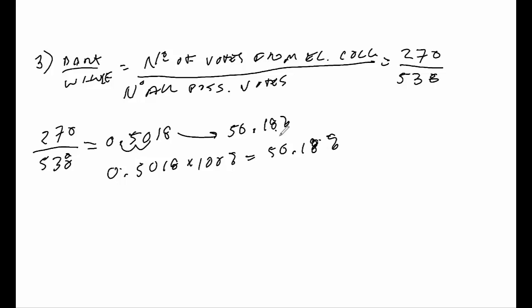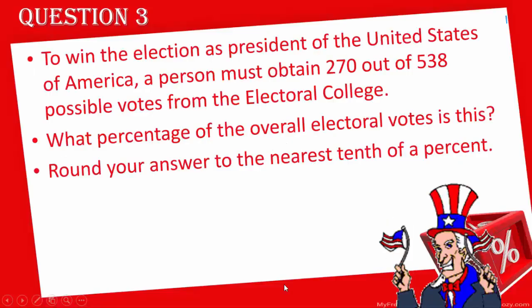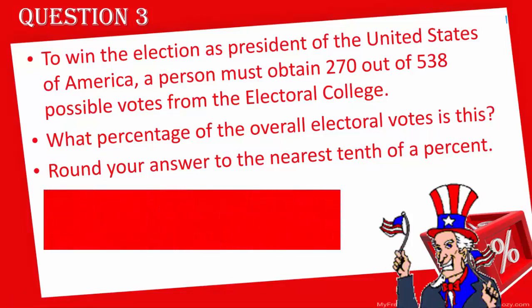The question also asks us to round to the nearest tenth. Here's the tenths place and here's the hundredths place — there's an eight in the hundredths place. According to rounding rules, if the digit next to the tenths place is five or over, the tenths digit rounds up. Since it's an eight, we round the tenths digit from one to two, giving us 50.2%.